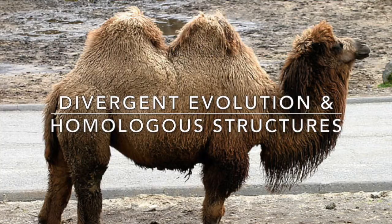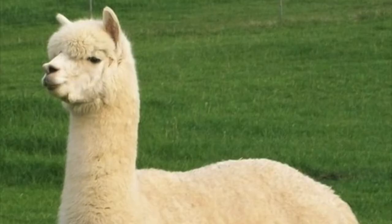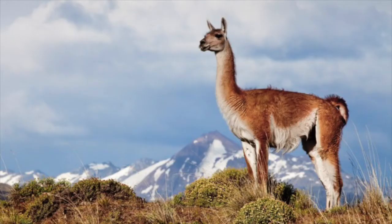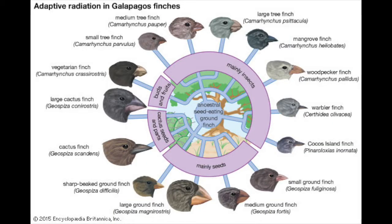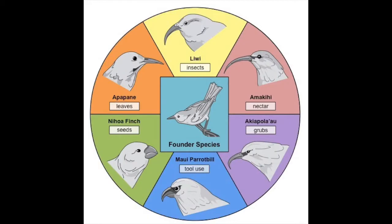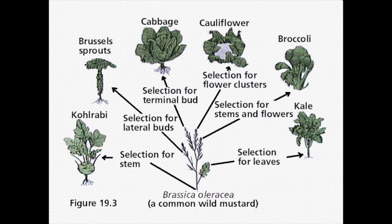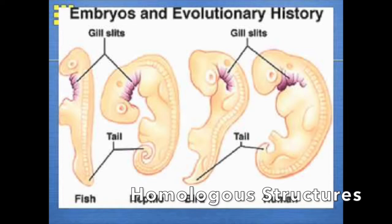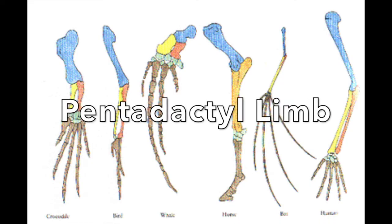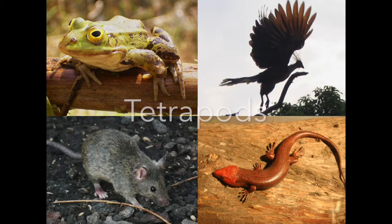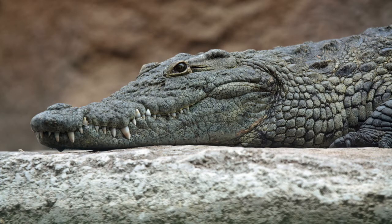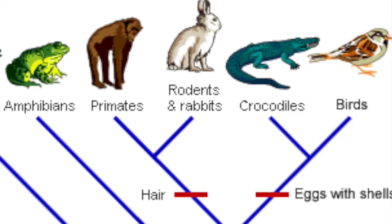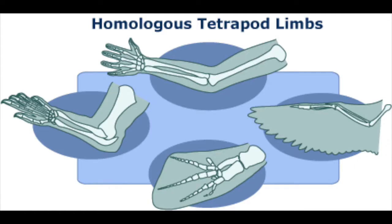On the other hand, when a lineage produces diversification through ecological specialization, resulting in the differentiation of common structures, it is the product of adaptive radiation. The structures are similar in anatomy but perform dissimilar functions, suggesting they were inherited from a common ancestor with a common developmental pattern and origin — these structures are called homologous. A classic example of homologous structures are the pentadactyl limbs in tetrapods. Tetrapods are those which have four limbs — birds, bats, mice, and crocodiles all have four limbs, while sharks and bony fish do not. The ancestor of tetrapods evolved four limbs and its descendants inherited that feature, so the presence of four limbs is a homology.